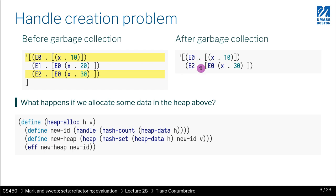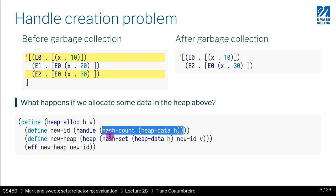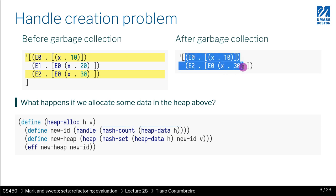If you look at the implementation, if you allocate a new environment, what's going to happen is that you're going to allocate the new environment over E2 as well. Because the way you get the handle ID is by counting how many environments you have.